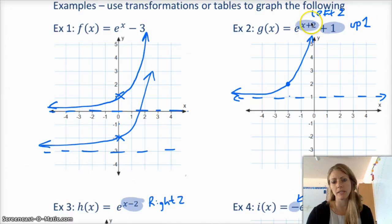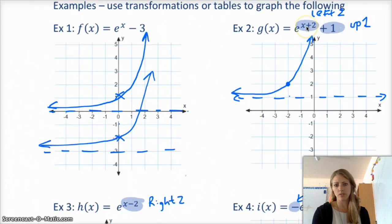So, example 2, this is just applied to the x, so it's horizontal, and it's opposite of what you think. So, it's left 2. The plus 1 is up 1, so this should be your graph.